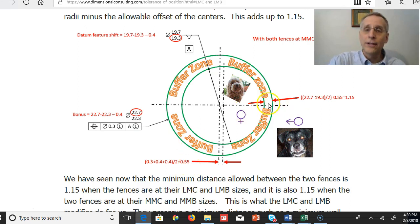So now if we look at the minimum distance here, that's going to be the largest outside hole, I'm sorry, the largest outside fence, minus the smallest inside fence, divided by 2 to get it radial, minus the amount the centers can be offset from each other. And that ends up once again being 1.15.